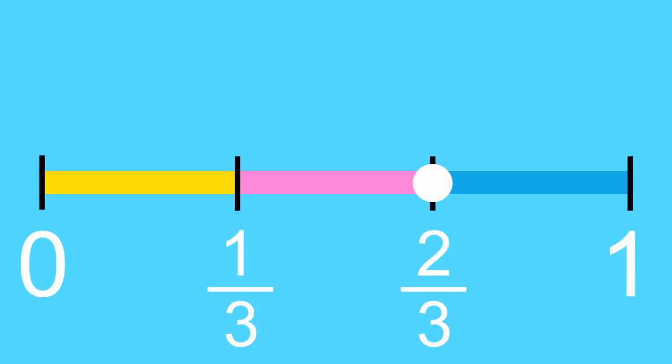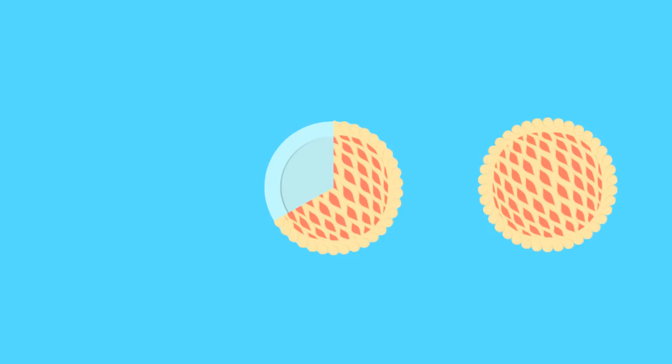Let's ask ourselves, does this make sense? Well, when we have 2 thirds of a pie, that's closer to being a full pie than an empty pie, right? Okay, let's look at some other fractions.